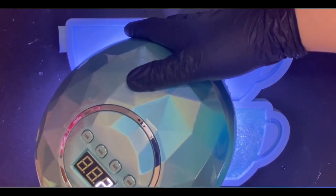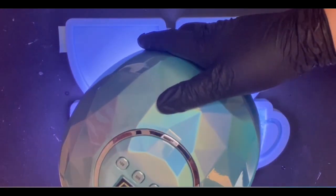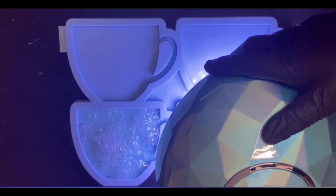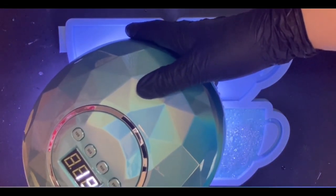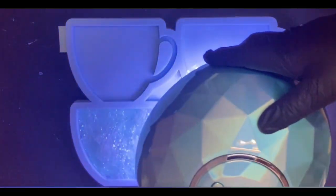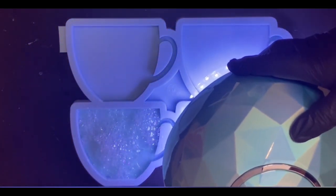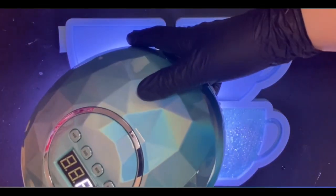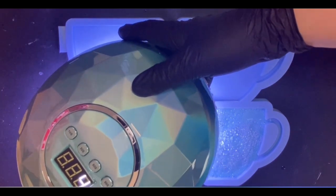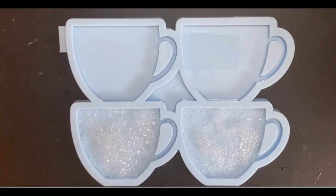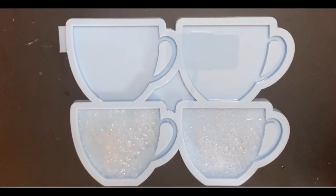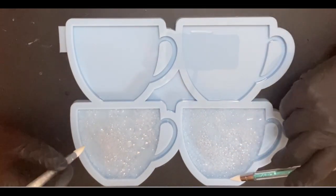So we are not putting the lamp on too long. I think in total for each coaster, it's something like 30 seconds. And then the UV resin is not hardened. It's still a little bit sticky because we want to put our micas on there.